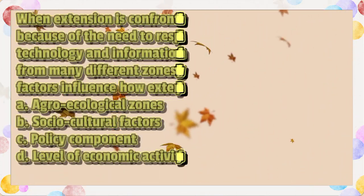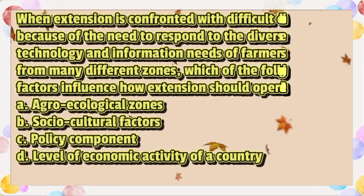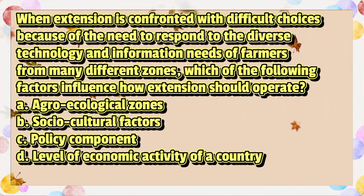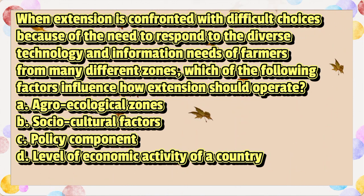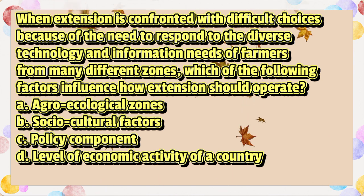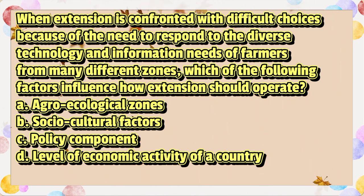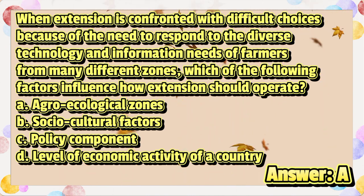When extension is confronted with difficult choices because of the need to respond to the diverse technology and information needs of farmers from many different zones, which of the following factors influences how extension should operate? A. Agro-ecological zones. B. Sociocultural factors. C. Policy component. D. Level of economic activity of a country. The answer is letter A.